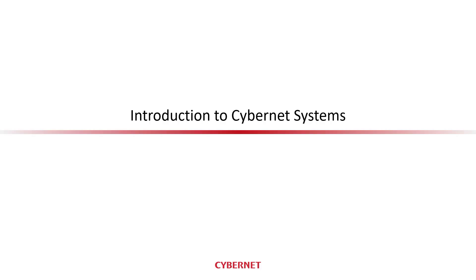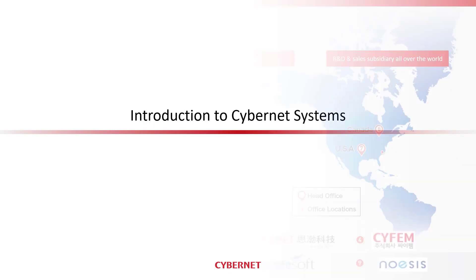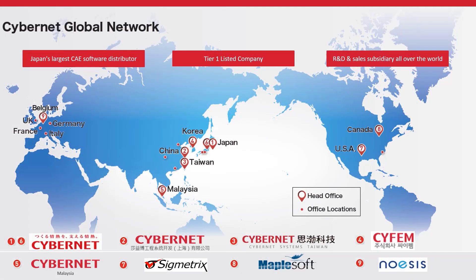Cybernet Systems has been around for almost 30 years. Our HQ is located in Japan — we are Japan's largest CAE software distributor, a tier-one listed company with R&D and sales subsidiaries worldwide. Outside Japan we have four overseas sales subsidiaries: Cybernet Taiwan, Cybernet China, Cybernet Korea (Sypham), and Cybernet Systems Malaysia. We also have three software developer companies located in the USA, Canada, and Europe.